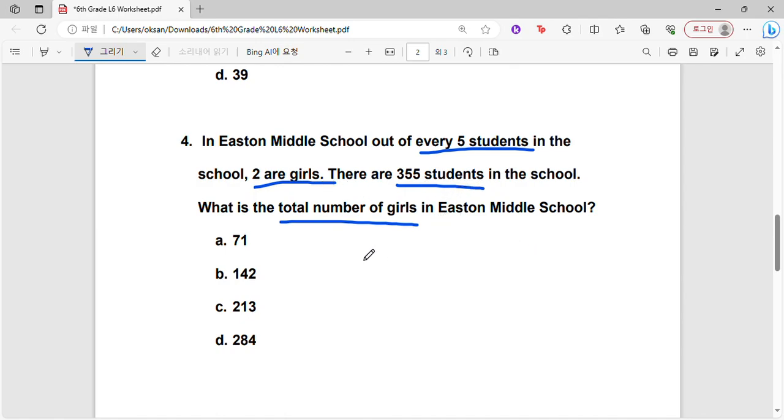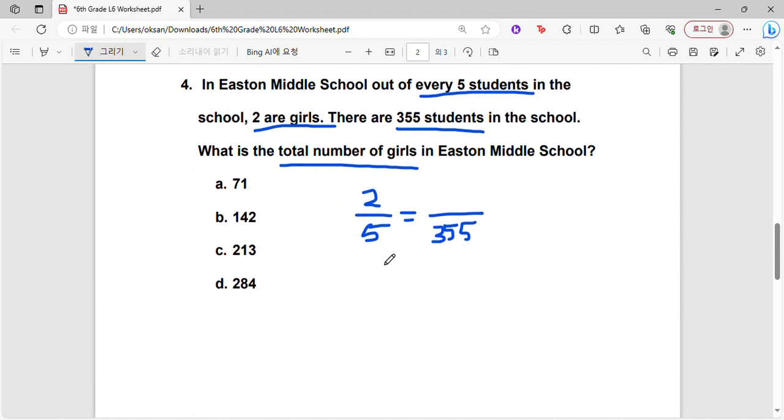Okay, so there's 2 girls for every 5 students, right? And so if there are 355 students in total, what is the total number of girls in Easton Middle School? And so let's find the number we would have to multiply by. So we would have to do 355 divided by 5.